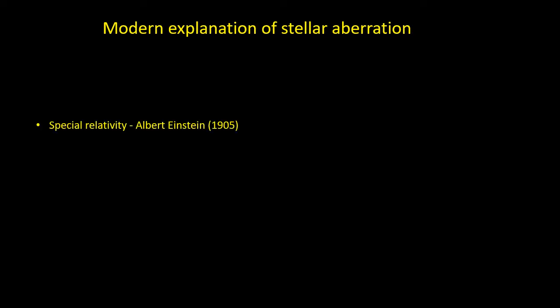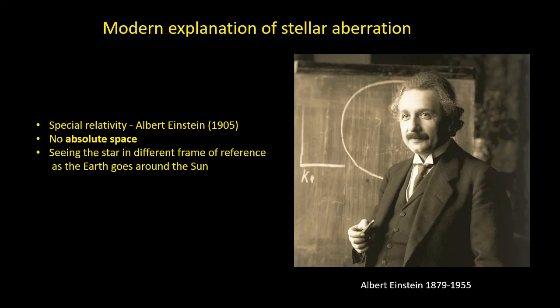Today, the generally accepted explanation of stellar aberration is by Einstein's theory of special relativity. In special relativity, there's no absolute space. As the Earth moves around the Sun, we are observing the star in different reference frames, and each of these reference frames, the star has a slightly different position due to the difference in relative motion of the Earth with respect to the star.